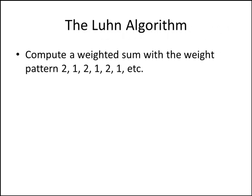So how does the Luhn algorithm work? Well, we want to compute a weighted sum with the weight pattern 2, 1, 2, 1, 2, 1, and so on. So that means we're going to be writing out the digits of our credit card number and then we're going to be multiplying each digit by the corresponding weight.